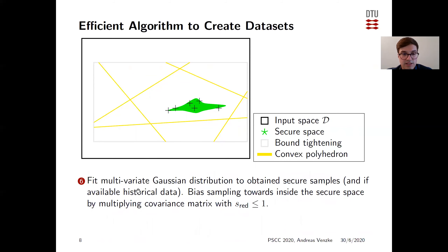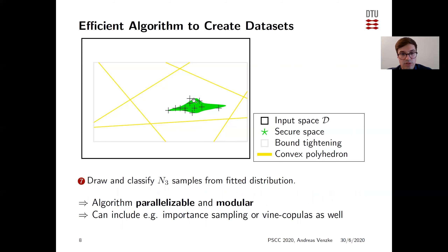In the next step, we fit a multivariate Gaussian distribution to the obtained secure samples, and if available, to historical data of secure samples. To get a good characterization of the interior of the secure space, we bias the sampling by multiplying the covariance matrix with a factor smaller than one. We then draw and classify N3 samples from this fitted distribution. Overall, this algorithm is parallelizable and modular, and we can also incorporate importance sampling or vine copulas at different stages.